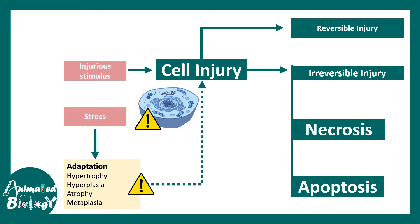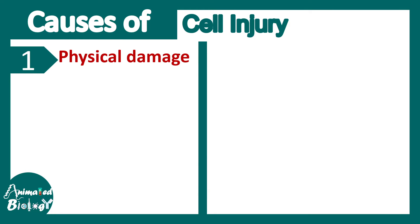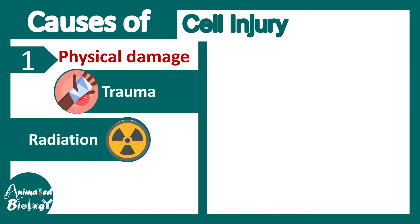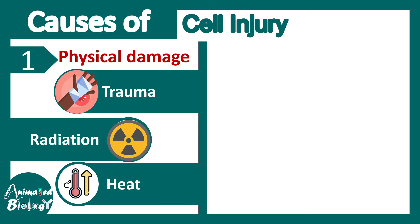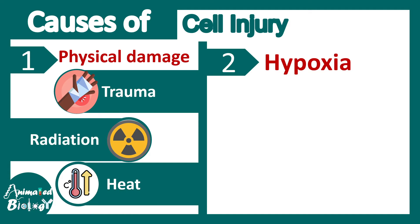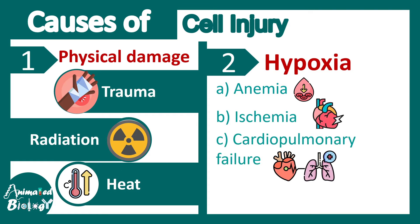One such stress that cells undergo is ATP depletion. Before explaining why, let me note that cells can get injured in many ways. There could be physical damage like trauma, radiation, or heat. There could also be internal damage — for example, hypoxia due to anemia, ischemia, cardiopulmonary failure, or some kind of poisoning. All these things can lead to cellular injury and ATP depletion.